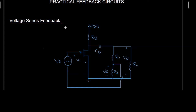Bismillahirrahmanirrahim, Assalamu Alaikum. In this lecture we are going to discuss practical feedback circuits. Our first circuit is the voltage series feedback amplifier. The first term indicates sampling, so at the output we are going to have voltage sampling, which means at the output we are going to have the voltage. The second term indicates mixing.